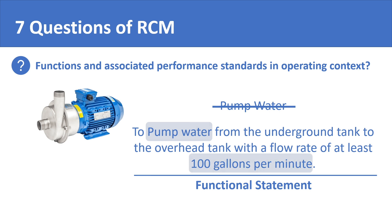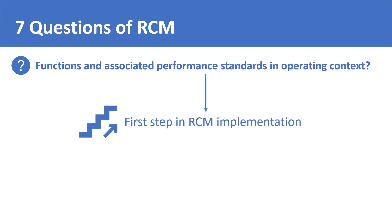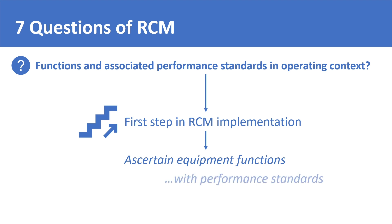So the answer to the first question of RCM becomes the first step in implementation of RCM. It is to ascertain the functions of the equipment in your plant. These functions must not be generic — they must always include the performance standard in the operating context.